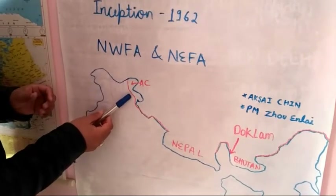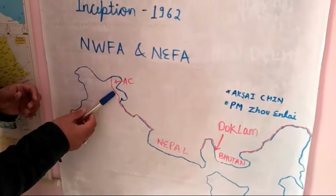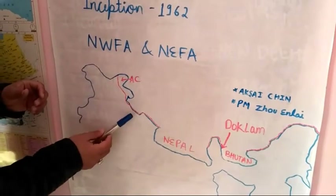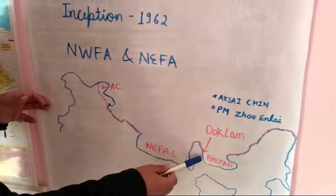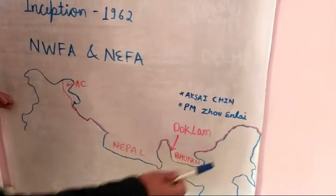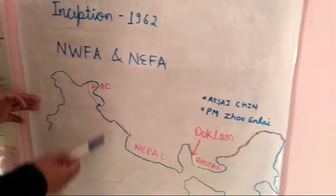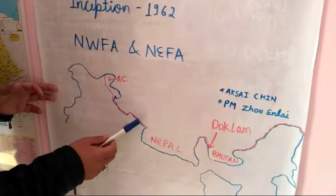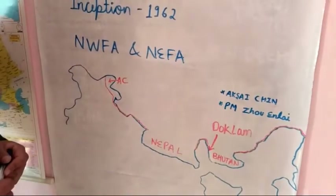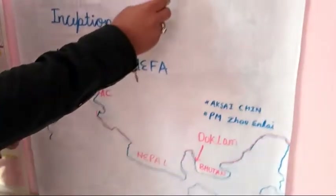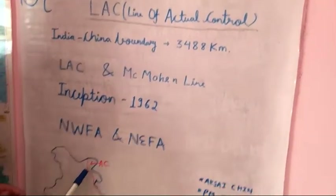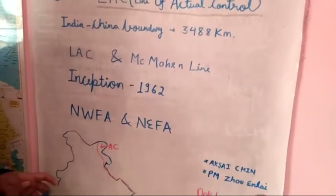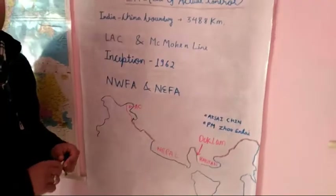From Aksai Chin, the Line of Actual Control then covers the states of Jammu and Kashmir, Himachal Pradesh, Uttarakhand, Sikkim, and Arunachal Pradesh — five states in total. Although India shares a border of 3488 km with China, the Line of Actual Control itself is a boundary of 4057 km in total length.